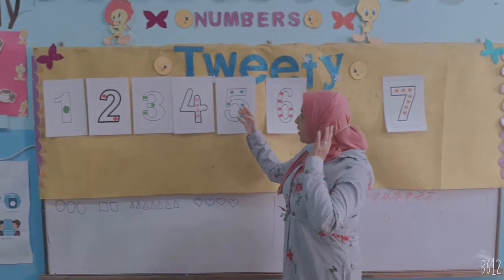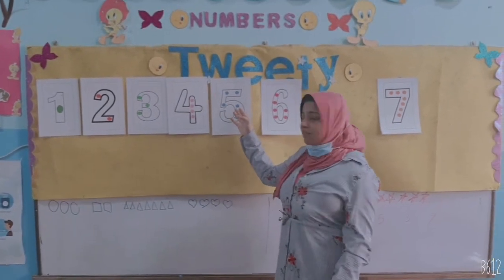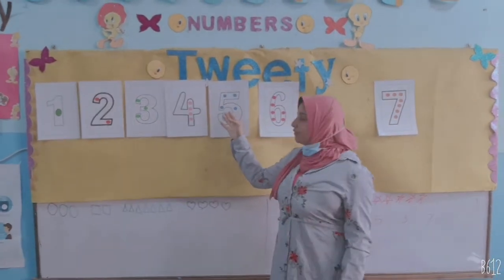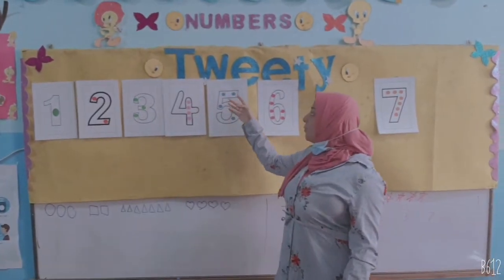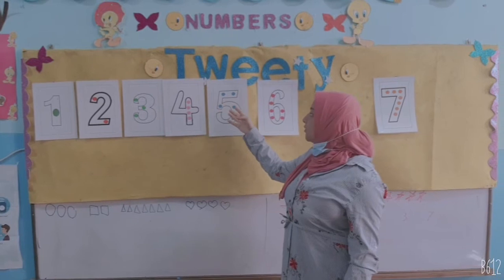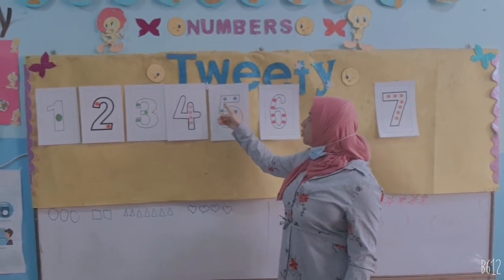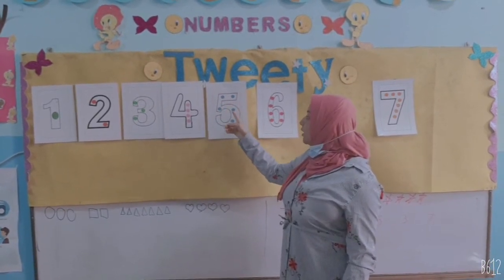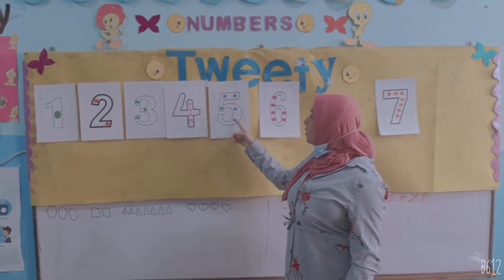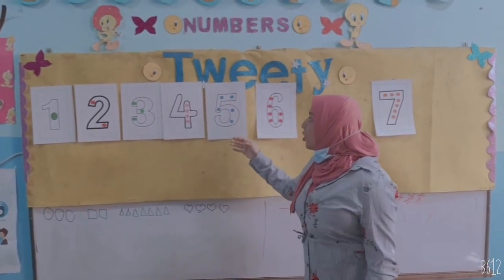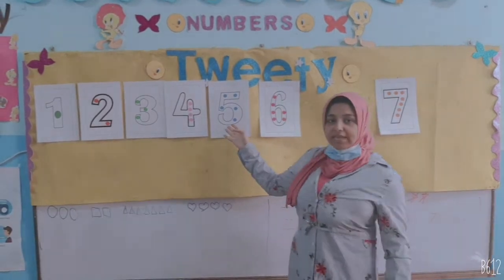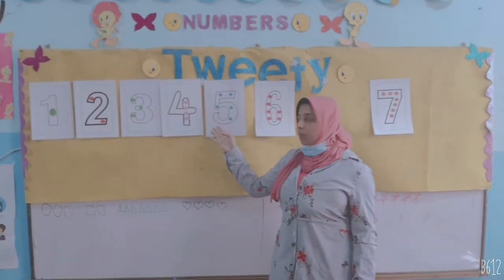What is number? 5. How many circles are there? 1, 2, 3, 4, 5. What color is it? Blue.